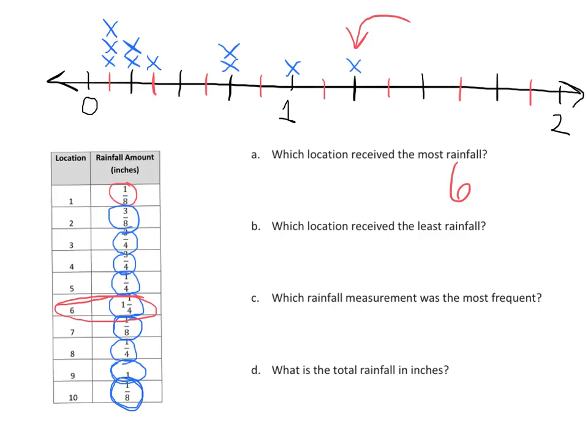Which location received the least rainfall? That would be all of these down here. So that's one-eighth. So that's location one, location seven, and location ten. Here's one, seven, and ten.